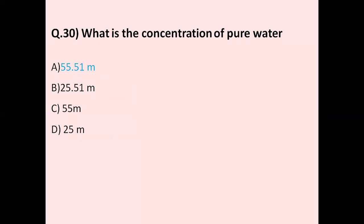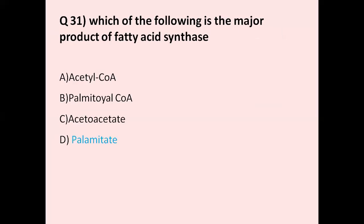Question number 30: What is the concentration of pure water? Option A 55.51 mol, option B 25.51, option C 55 mol, option D 25 mol. The correct answer is 55.51 mol. The concentration of pure water is calculated by dividing density by molecular weight using the formula.